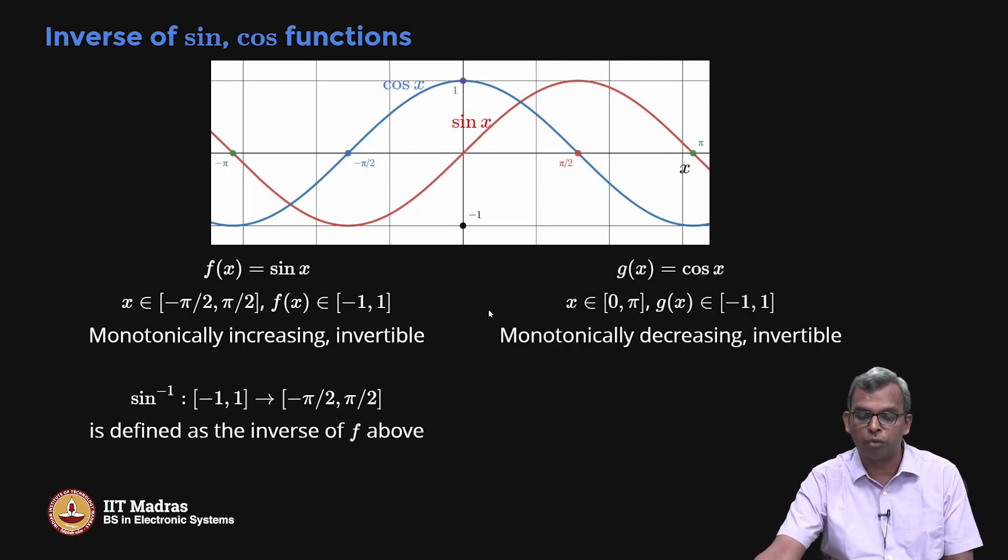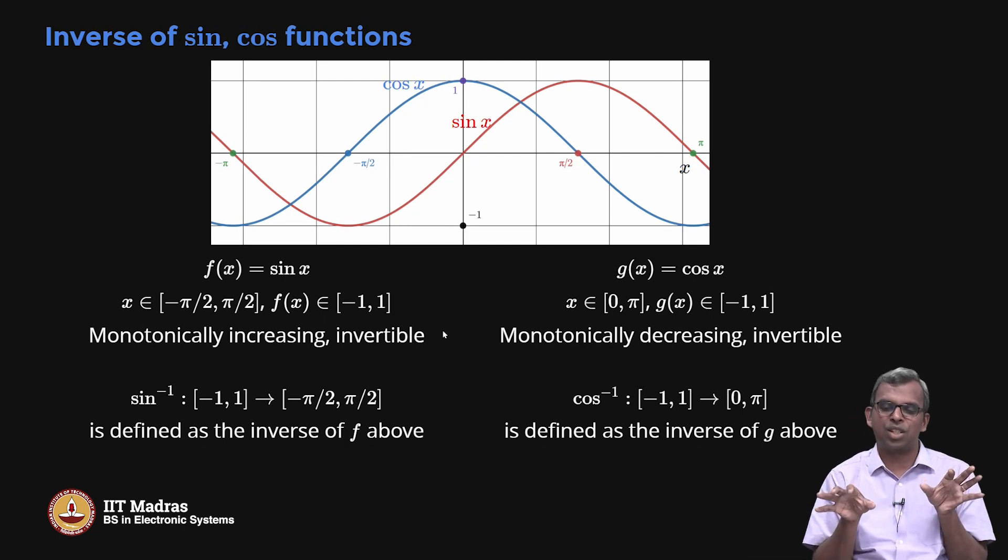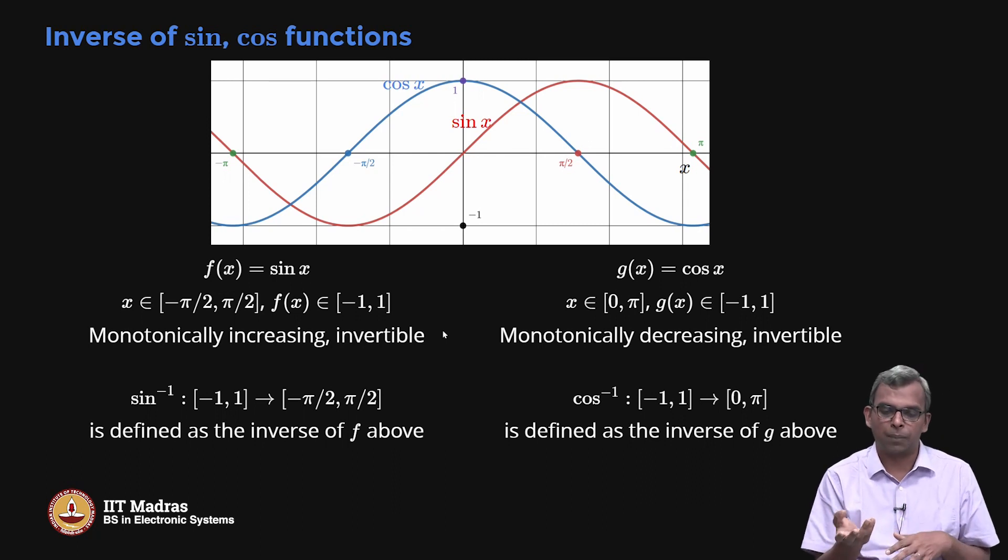I will define sin inverse as being a function which goes from [-1, 1] to [-π/2, π/2] and it is defined as the inverse of this function, between minus π by 2 to π by 2. For me my sin inverse will only be between minus π by 2 and π by 2. I can do the same sort of trick for cos. If I define a function g to be cos x, I can restrict the interval to 0 to π. If I do 0 to π, you see that cos is monotonically decreasing and so it becomes invertible. So 0 to π is very important. I will define cos inverse as being [-1, 1] to [0, π]. It is defined as the inverse of this function.